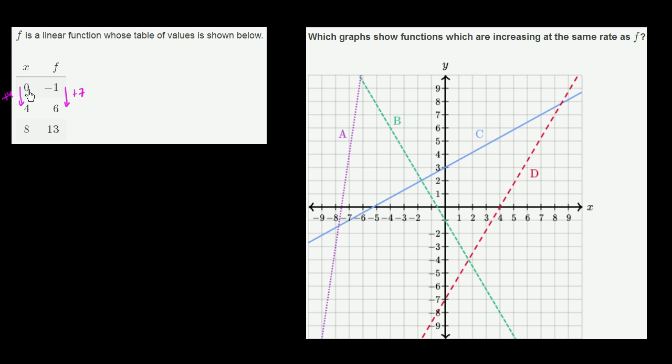So if we see here, when x is 0, f is negative 1. And when x is 4, f is 6. So 1, 2, 3, 4, 5, 6. So just like that.